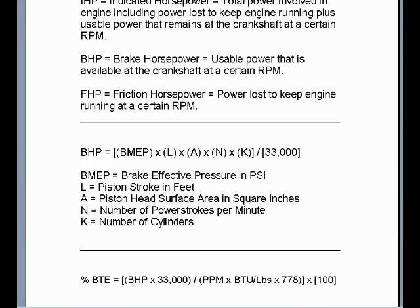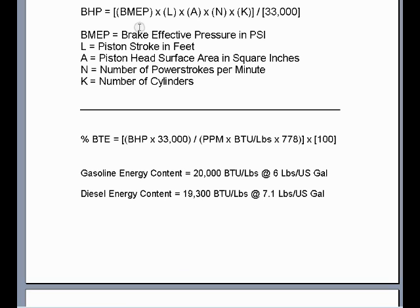Once you get the BMEP, you can calculate the brake horsepower. First, enter the BMEP in pounds per square inch, then multiply it times the piston stroke length in feet — take the inch measurement of piston stroke and divide it by 12. Then use the formula for the area of a circle, pi r squared, to calculate the piston head surface area in square inches. That's the bore diameter in inches divided by two, squared — giving you radius squared — then multiplied times 3.14, or pi. That converts the bore diameter into the surface area of the piston head in square inches.